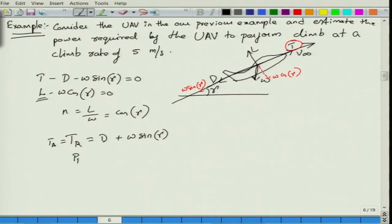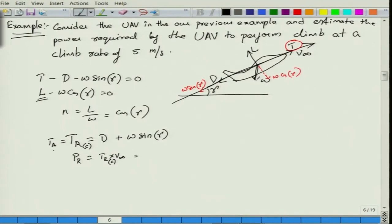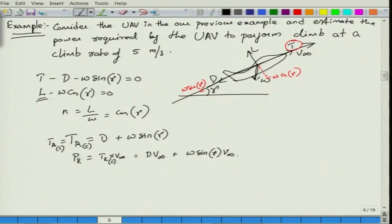The power required by the system is thrust required times V-infinity. The thrust required for climb — denoted TR(C) where C indicates climb — should be drag plus W sin γ. So the power required equals drag times V-infinity plus W sin γ times V-infinity. We need to know this value to solve the example — this is the power required by the system, and we need to know the shaft power that the engine must deliver.